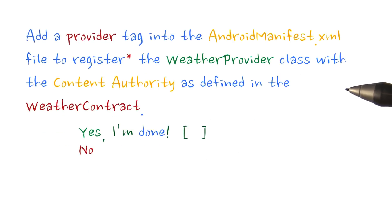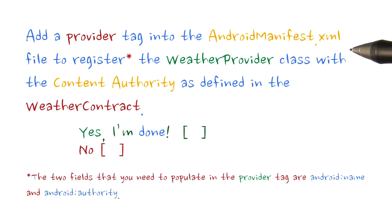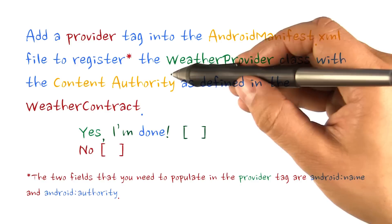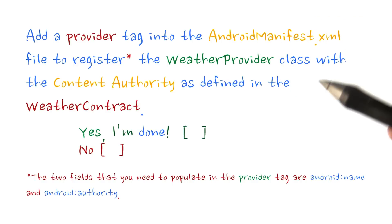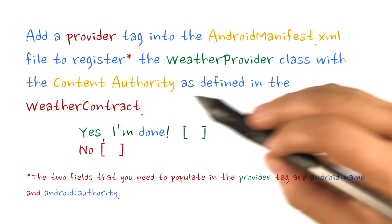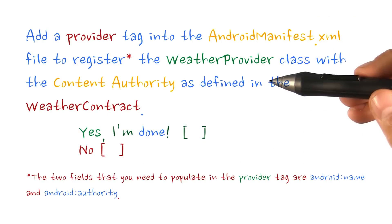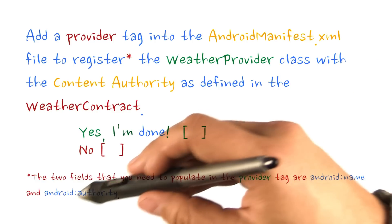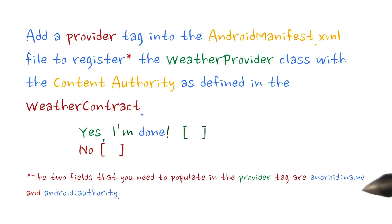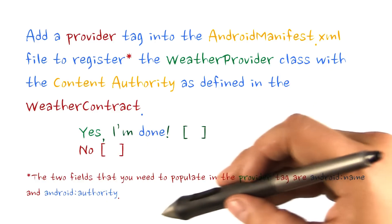Add a provider tag into the AndroidManifest.xml file to register the weather provider class with the content authority as defined in the weather contract. Note that the two fields you need to populate in the provider tag are Android colon name and Android colon authority.